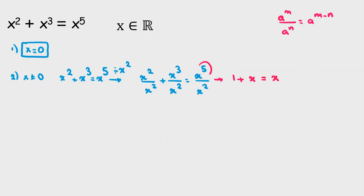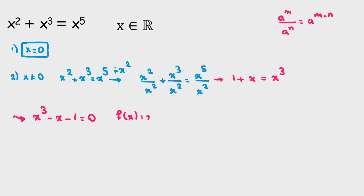And x to the 5 over x squared is x to the 5 minus 2, which is x cubed. So we get 1 plus x equal to x cubed, which rearranges to x cubed minus x minus 1 equal to 0. We want to see how many real solutions this equation has. Let's consider f of x equal to x cubed minus x minus 1, and compute the derivative f prime of x equal to 3x squared minus 1.